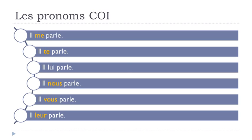Let's see examples. He's talking to me — il me parle. Remember: me before the verb — il me parle. He's talking to you — il te parle. He's talking to him or her — il lui parle. He's talking to us — il nous parle. He's talking to you (plural) — il vous parle. He's talking to them — il leur parle.